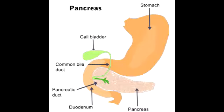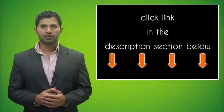What would be the result if cancer of the pancreatic head starts obstructing the bile duct? If the cancer at the level of the pancreatic head starts obstructing the bile duct, this will lead to painless jaundice.